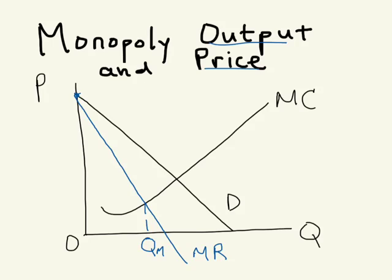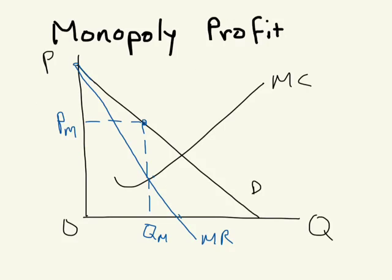One thing students often do by mistake is say the price is equal to marginal cost — that's not true for the monopolist. We read the price off the market demand curve. As I say repeatedly: John D. Rockefeller did not get rich by charging a price equal to his marginal cost. You charge a price higher than cost — that's how you get rich. So monopoly output is where marginal revenue equals marginal cost, and the price P sub M is the highest price the monopolist could charge and still sell that quantity, read off the demand curve.